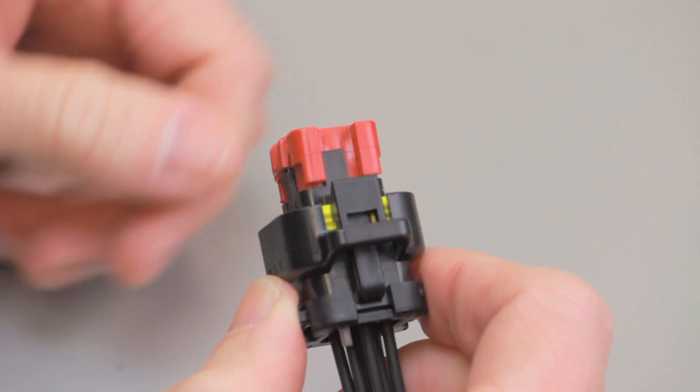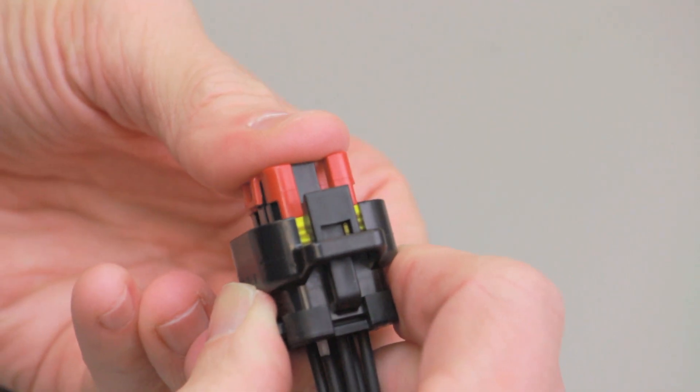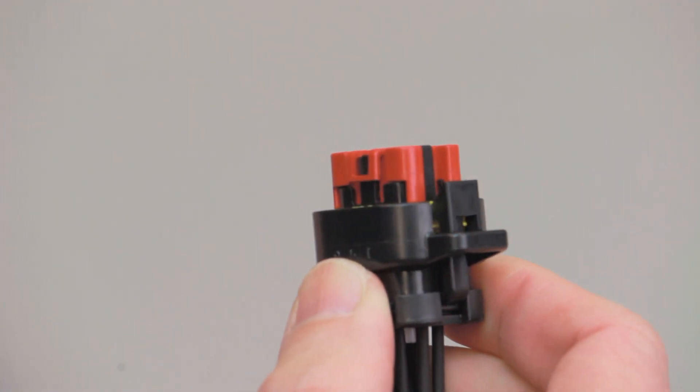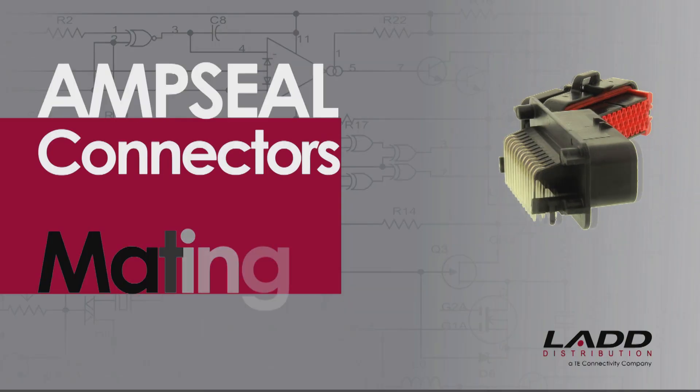After all the contacts have been inserted, close the wedge lock by pushing the wedge lock into the fully locked position. Amp seal connector mating.